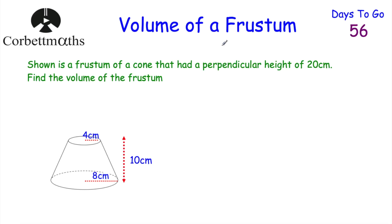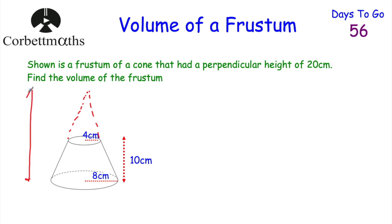Today we're going to be looking at finding the volume of a frustrum. Here we've got a question that says this is the frustrum of a cone that had a perpendicular height of 20 centimetres. The top's been chopped off and what's left is the frustrum. To find its volume, we'll first find the volume of the whole cone, then find the volume of the bit that was chopped off — the smaller cone — and take that away to see what's left.